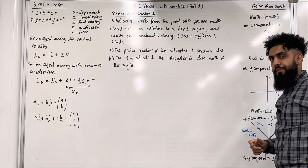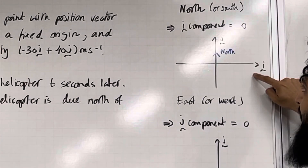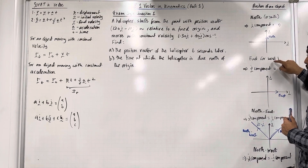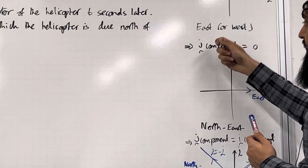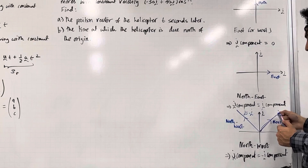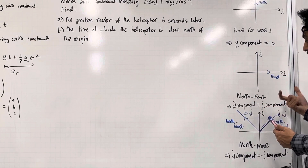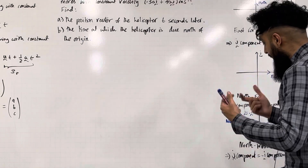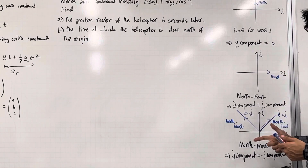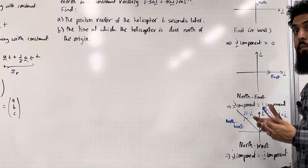Let's have a look at the position of an object. Firstly, if the position of the object is in the north or south direction, the i-component of the position vector has to equal zero. Secondly, if the position is in the east or west direction, the j-component of the position vector has to equal zero. Thirdly, if the position is in the northeast direction, J = I, so the j-component has to equal the i-component. Finally, if the position is in the northwest direction, J = −I, so the j-component has to equal the negative of the i-component.